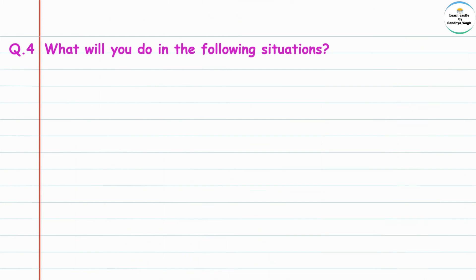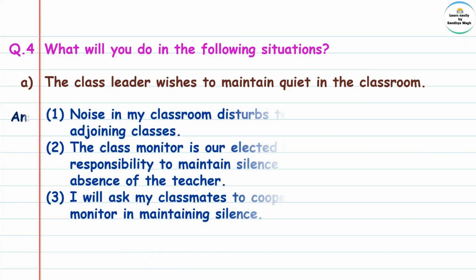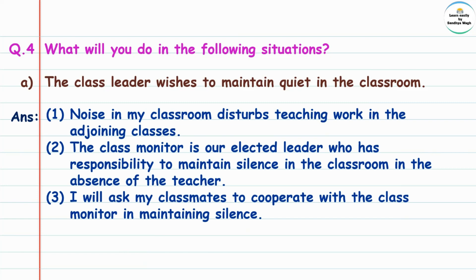Question 4: What will you do in the following situations? The class leader wishes to maintain quiet in the class. Class leader means class monitor. He wants to maintain shantata in the classroom. Answer: Noise in my classroom disturbs teaching work in the adjoining classes — adjoining classes means the nearby classes, shejari asnarye classes.